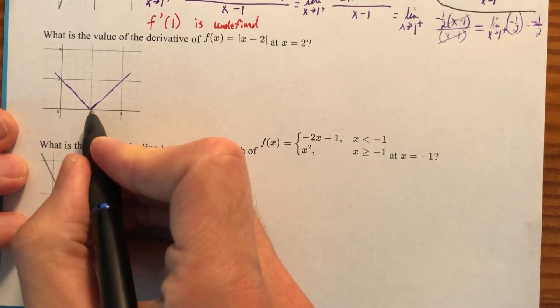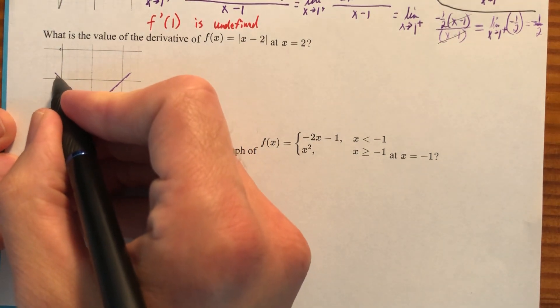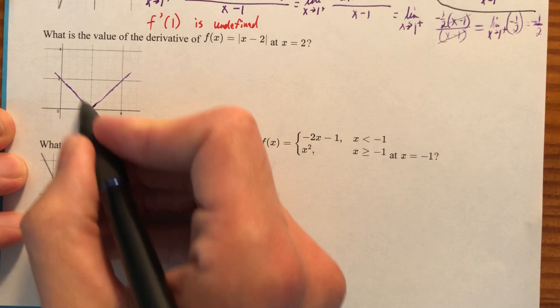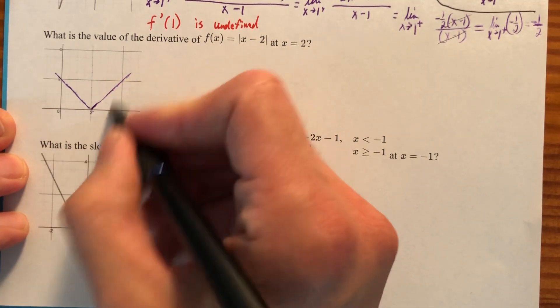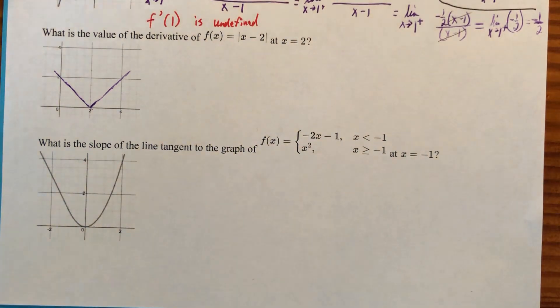I want to know the slope at 2. And the slope at 2 is, well, I come in from this side, and I have a slope of negative 1. I come in from this side, I have a slope of positive 1. And the slope is not going to match up. I want to go ahead and tell you that this does not exist. The slope is undefined.